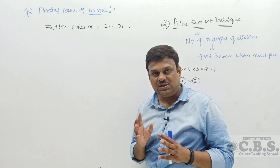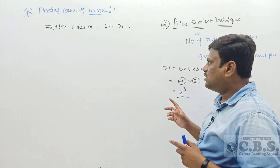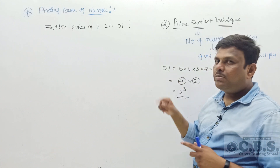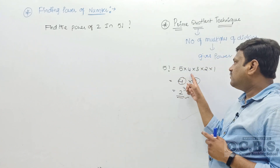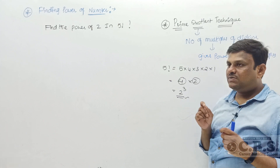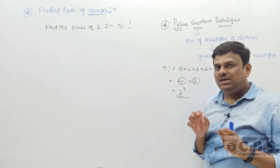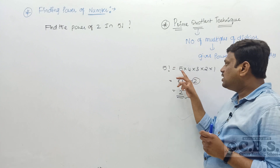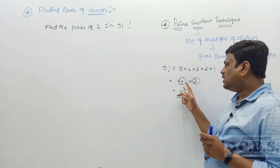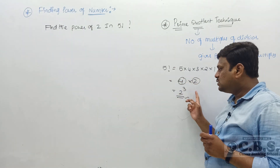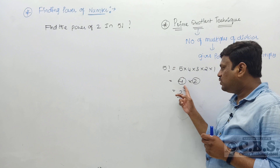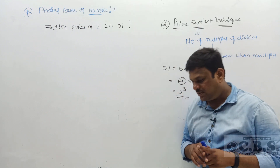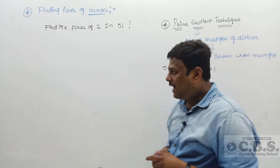Let us go to a simple example: find the power of 2 in 5 factorial. When you expand 5! you get 5 × 4 × 3 × 2 × 1. To find the power of 2, we only need to look at the multiples of 2 in that range, which are 2 and 4. Multiplying these gives us the total power of 2.